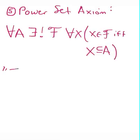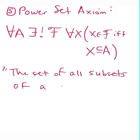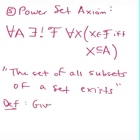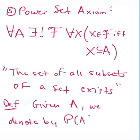So the shorthand for this is that the set of all subsets of a set exists. As a notational definition, given A, we denote by P of A the power set. The power set of A. So in other words, this P of A is going to be the set granted to us by axiom 5.